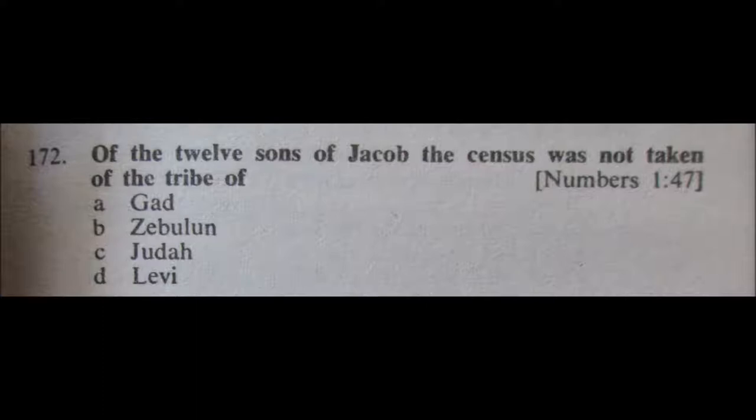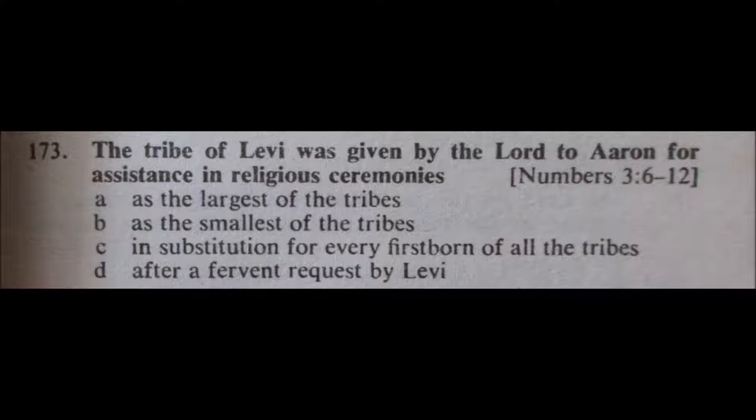173. The tribe of Levi was given by the Lord to Aaron for assistance in religious ceremonies: A, as the largest of the tribes; B, as the smallest of the tribes; C, in substitution for every firstborn of all the tribes; or D, after a fervent request by Levi.